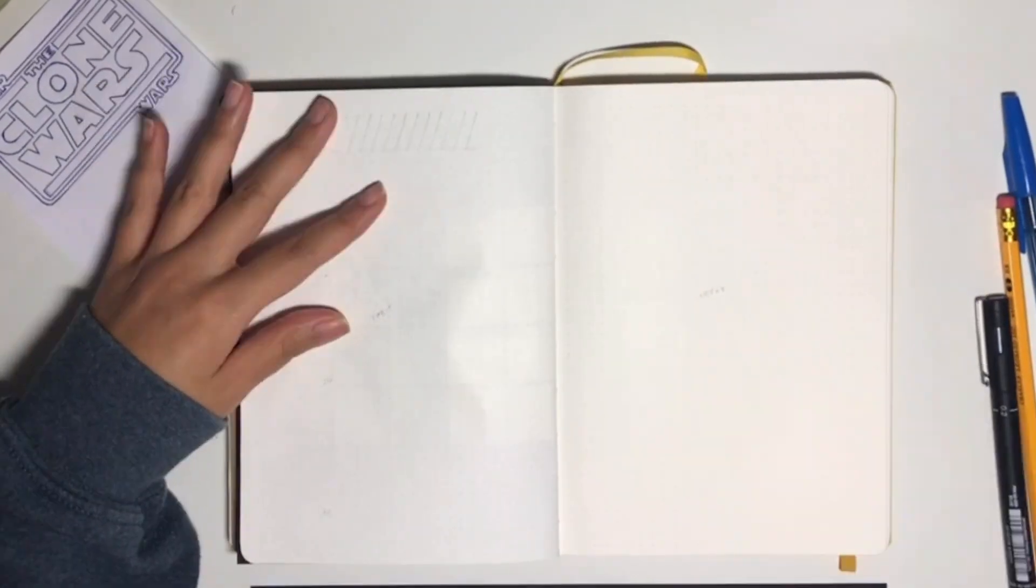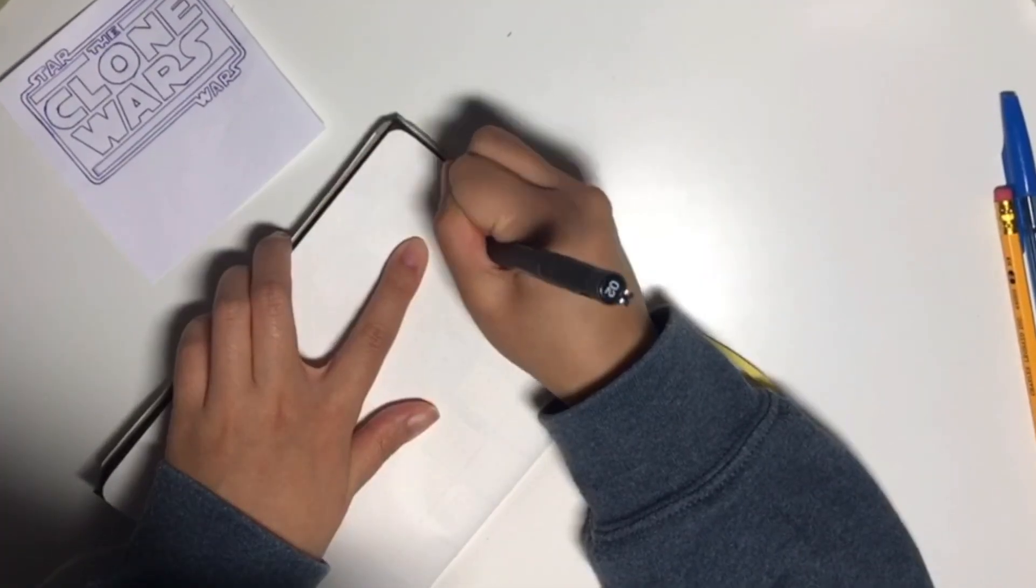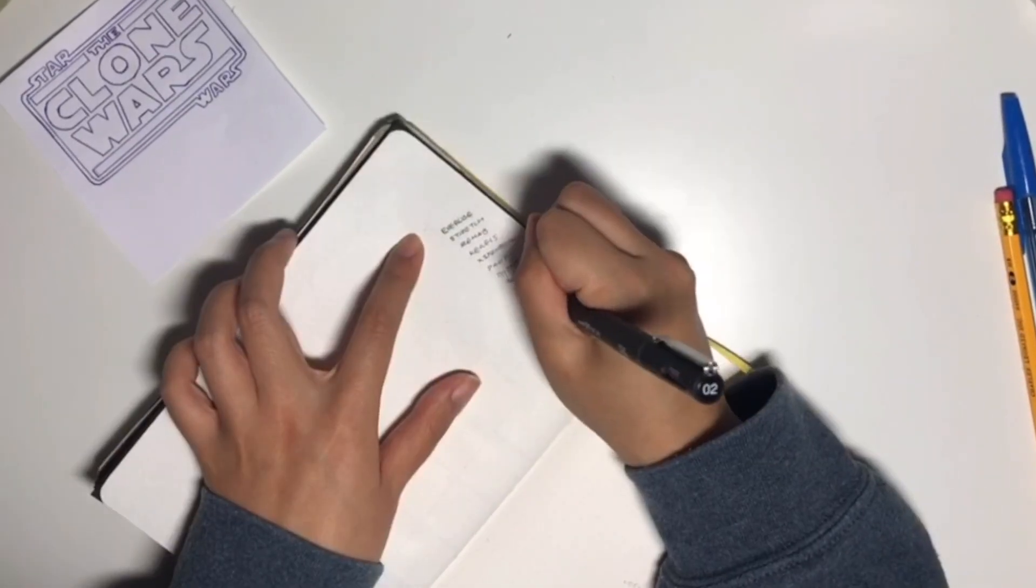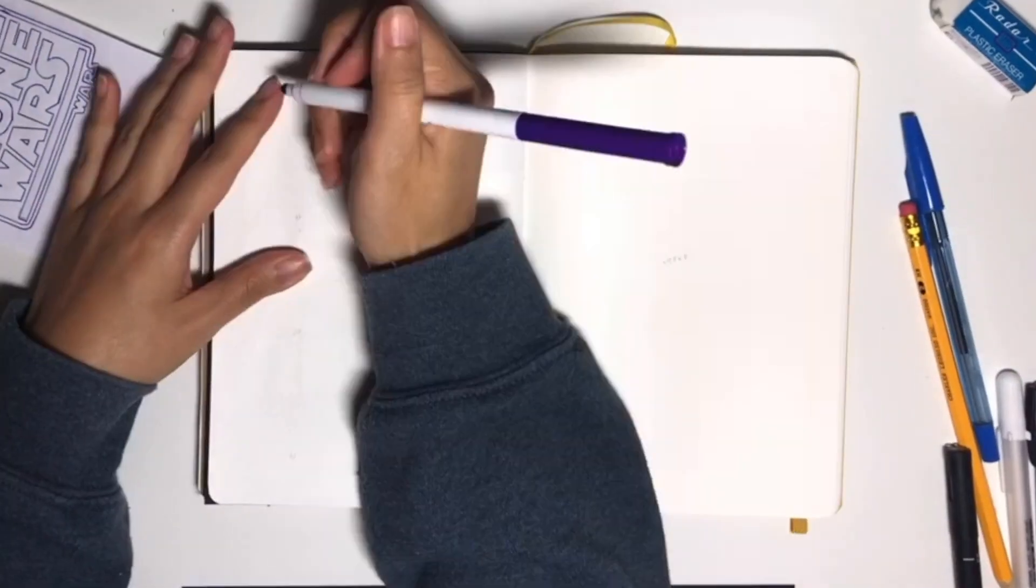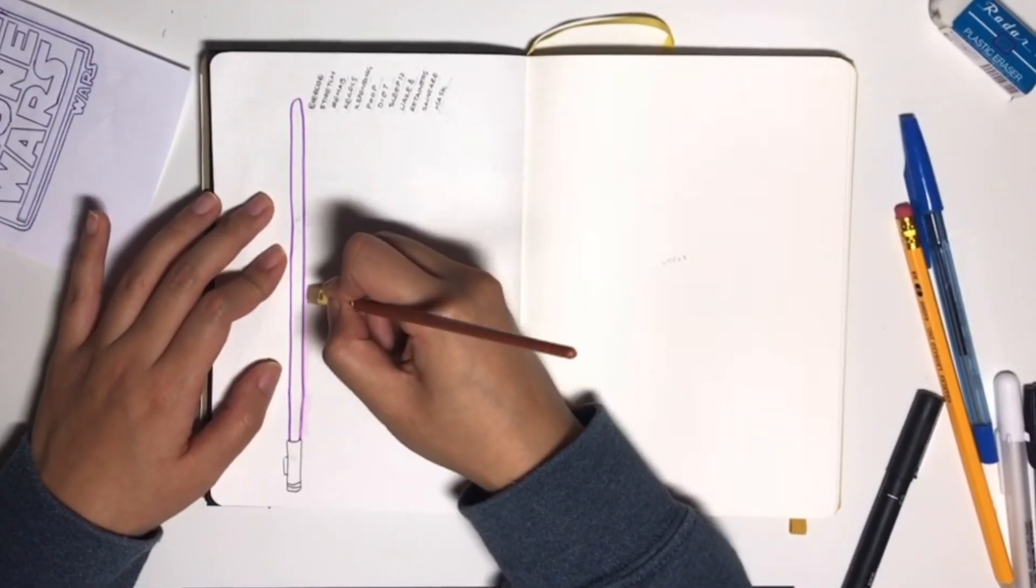And then moving on to the next page, I did my habit tracker and also the next four weeks upcoming in May to help me plan. School doesn't start until halfway through May. So I didn't do a whole full page for two weeks. I just combined them all.